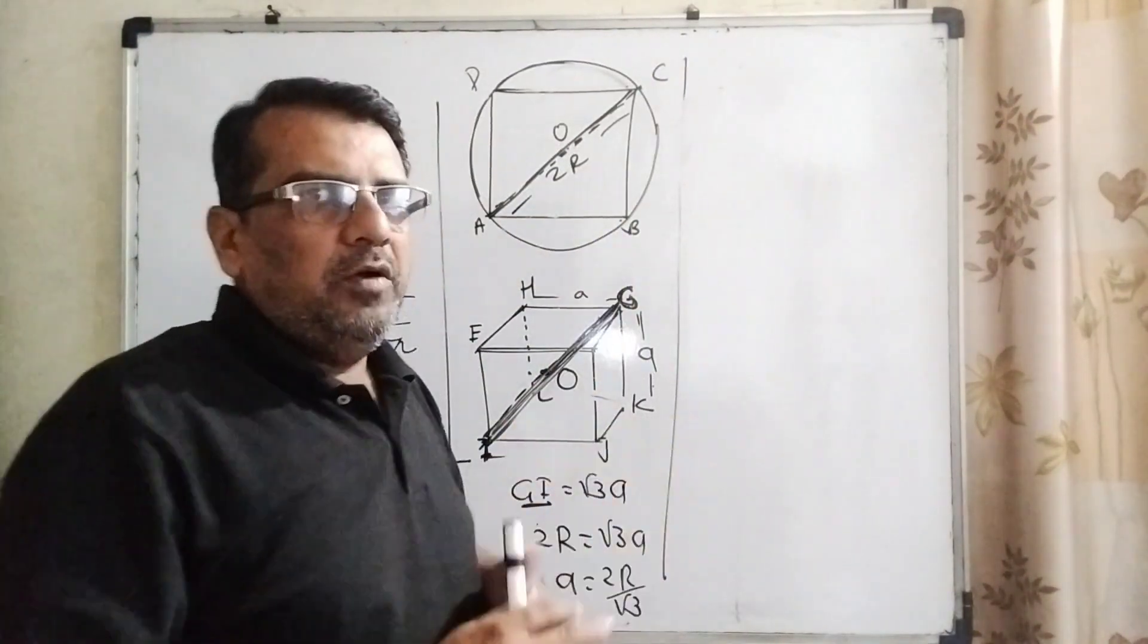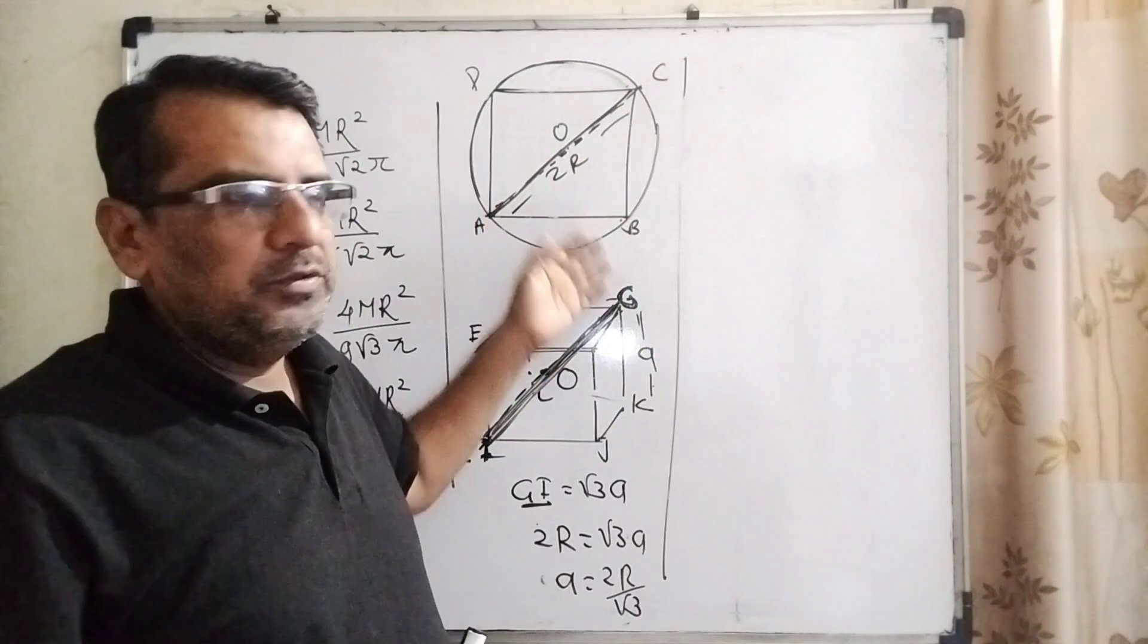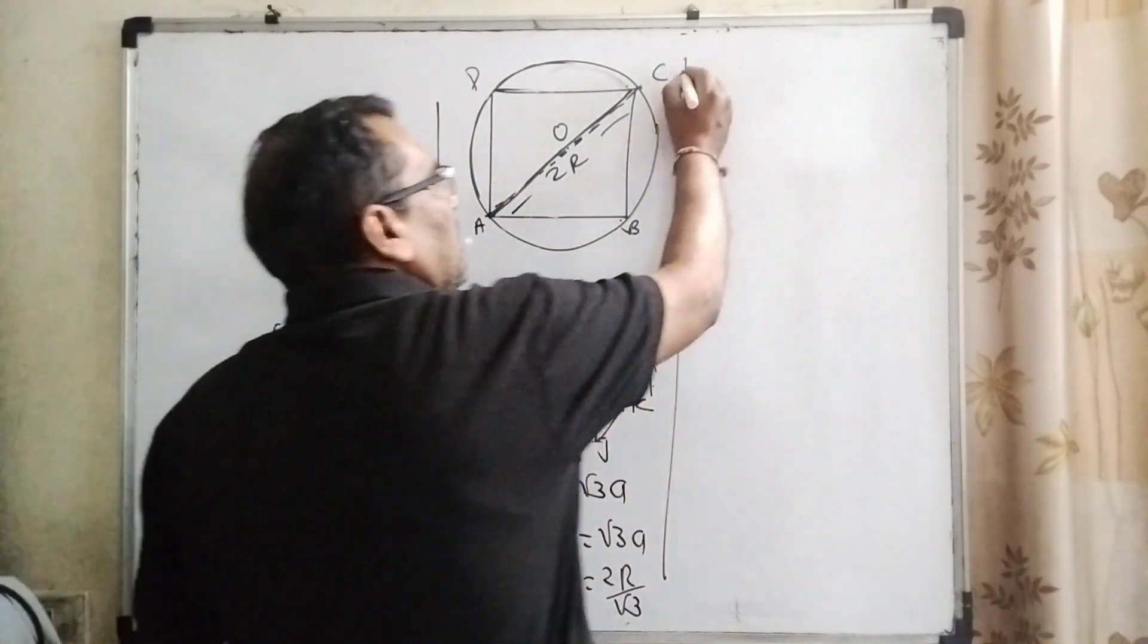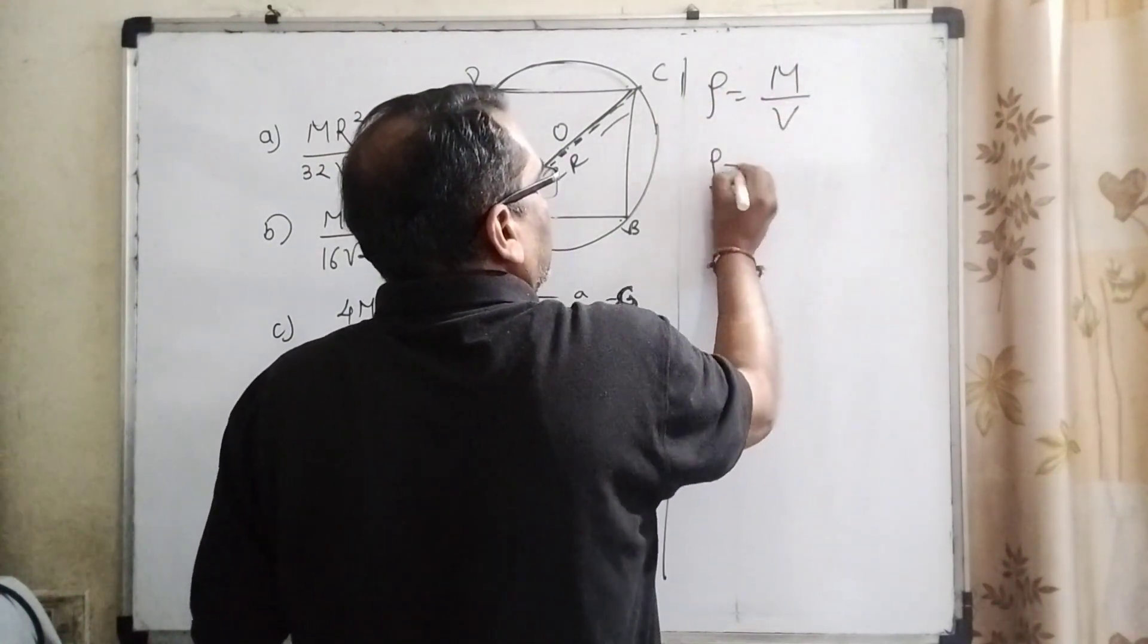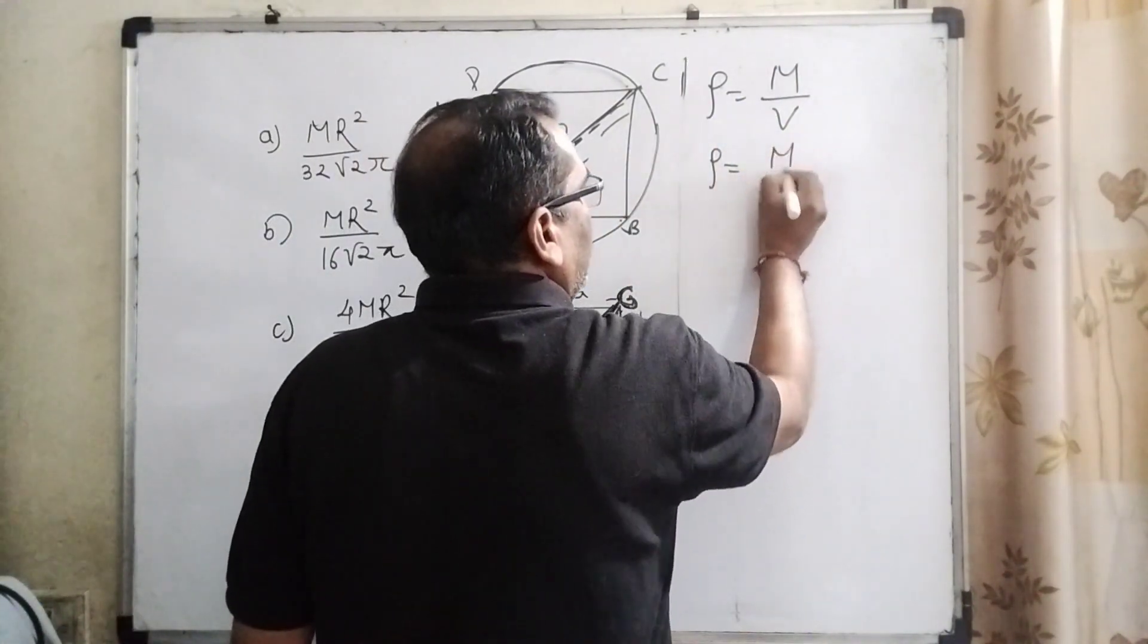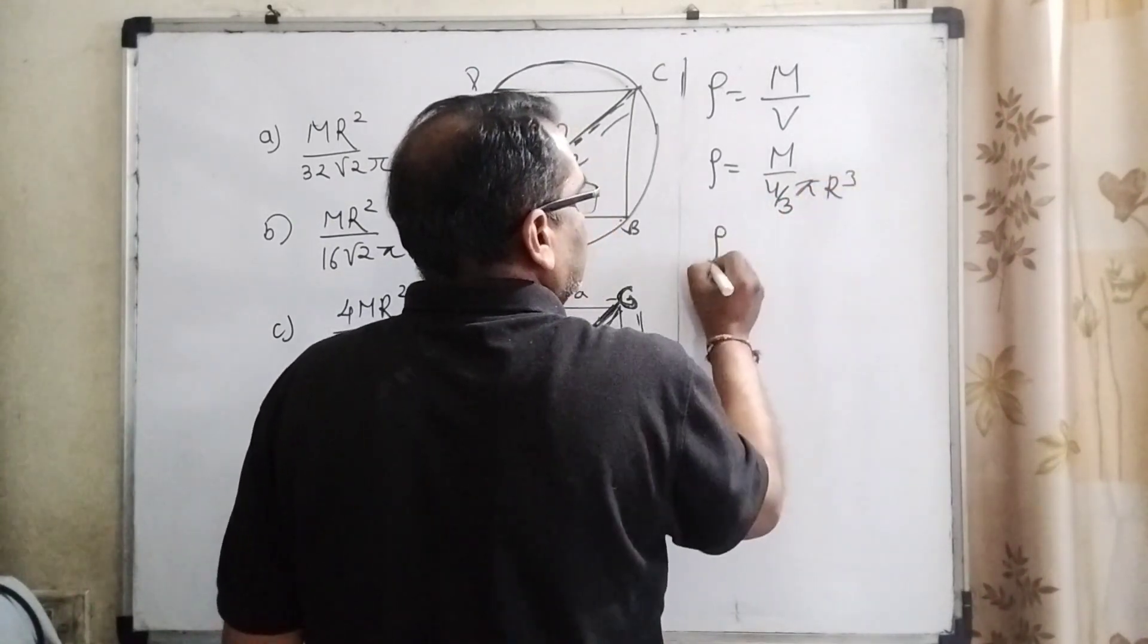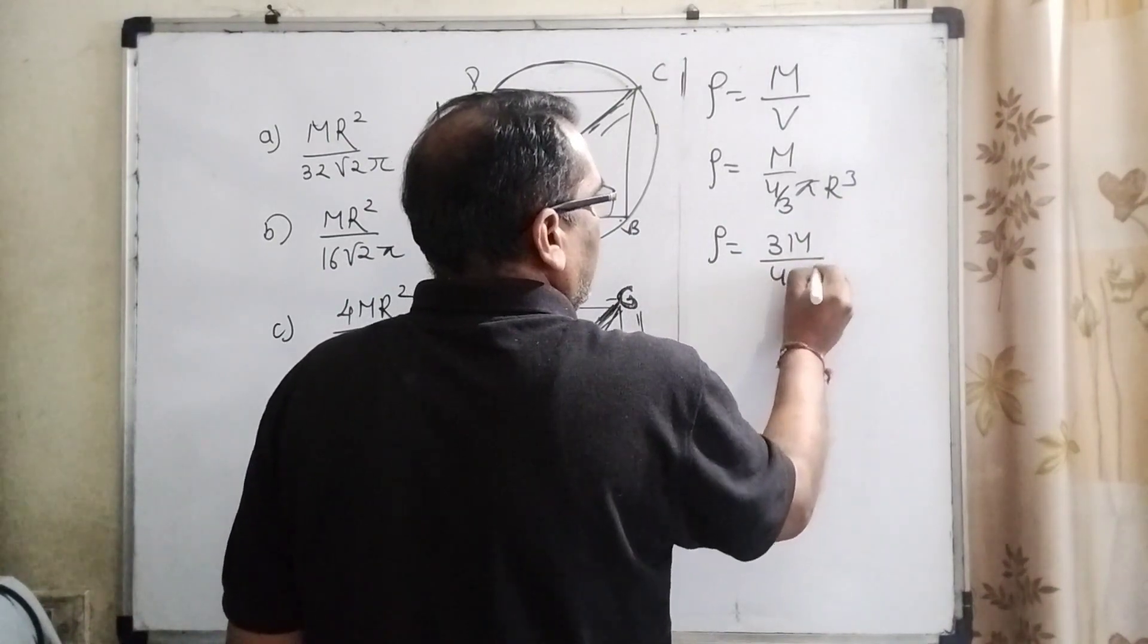Now you are well known that the density is never changed when melted and molded. So therefore, density of the sphere is mass upon volume of the sphere. Then density equals, let the mass of the sphere be capital M and volume be V = (4/3)πR³. That density can be written as 3M / (4πR³).